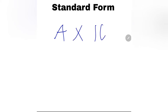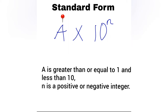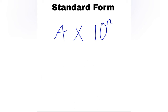When a number is in standard form, it is written in the form A times 10 raised to the power of N. The value A is a number that is greater than or equal to 1 but less than 10. The N is either a positive integer or a negative integer — for example, negative 1, negative 2, negative 20 — or a positive integer like 20, 40, 50, 100, and so on. Sometimes N can even be 0.